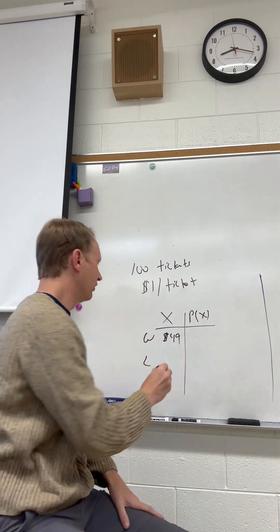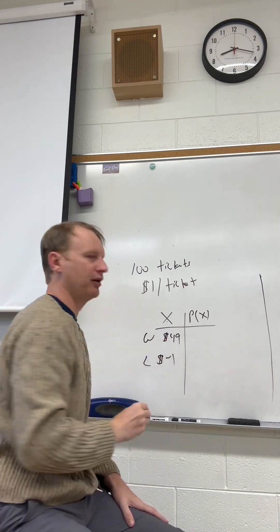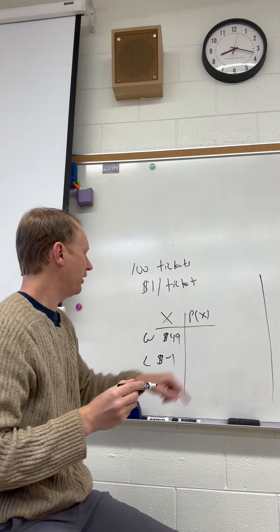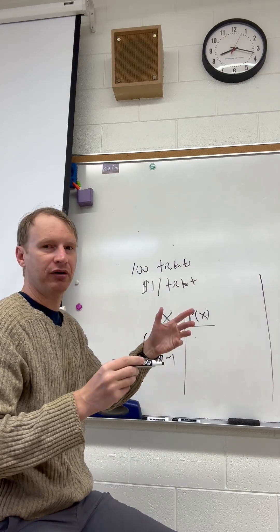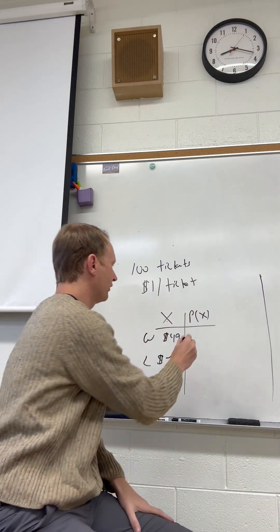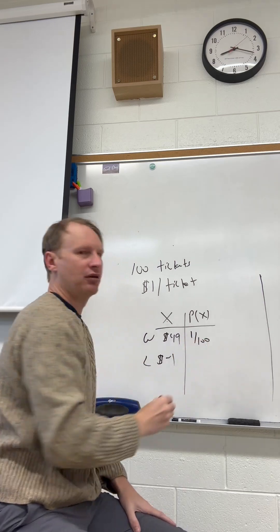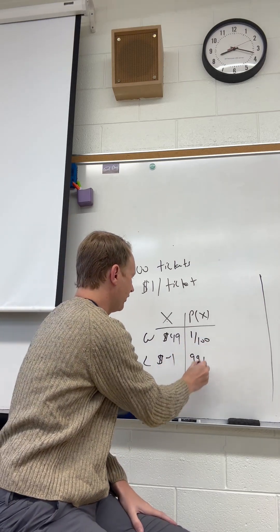Now if you lose, you lose a dollar, so that's minus one. What's the probability of winning? Well, there's one winner out of 100 tickets, so it's 1 out of 100. And the probability of losing is 99 out of 100.